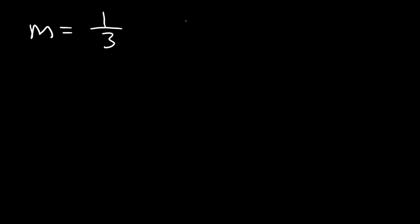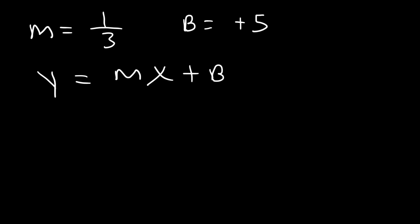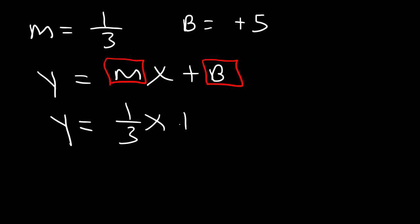Let's try another example. If you're given the slope 1/3 and the y-intercept positive 5, write the equation in slope-intercept form. All you need to do is replace m and b. The answer is y = (1/3)x + 5.